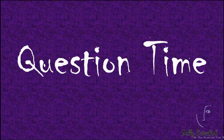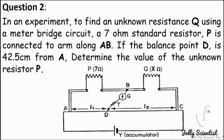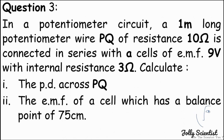Question 1: You connect a 2Ω resistor to two identical cells of EMF 1.5V and internal resistance 1Ω. Calculate the current in the circuit if connected in (a) series and (b) parallel. Question 2: To find an unknown resistance Q using a meter bridge, a 7Ω standard resistor P is connected along AB. If the balance point D is 42.5 cm from A, determine the value of the unknown resistance.